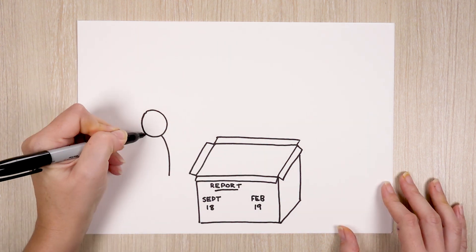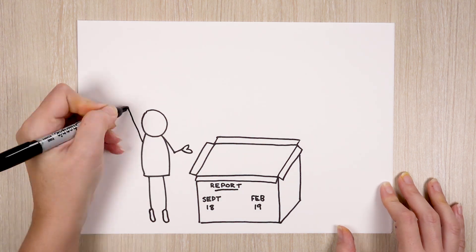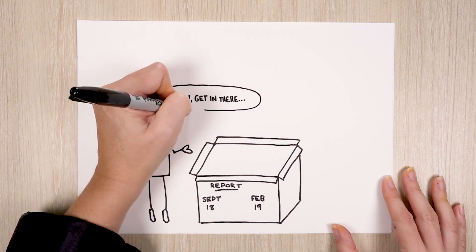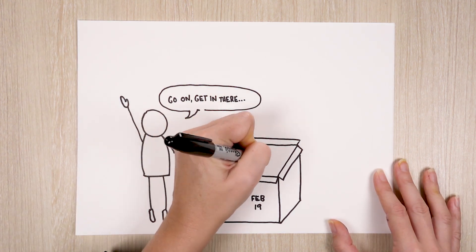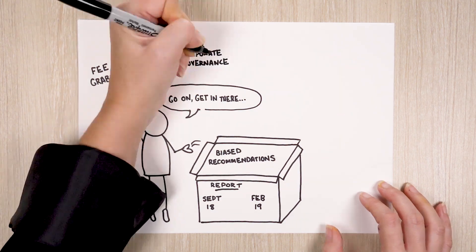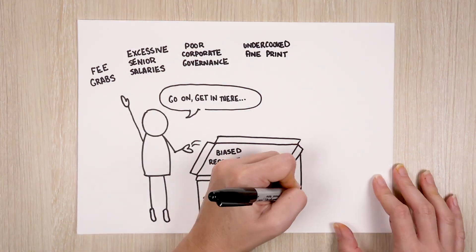What will the RC be keeping a close eye out for? Instances where the finance industry clearly didn't act in the best interest of consumers. Think biased recommendations, fee grabs, excessive senior executive salaries, poor corporate governance, undercooked fine print. You get the picture.